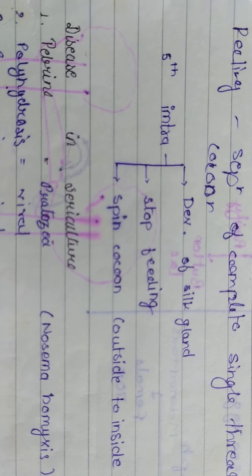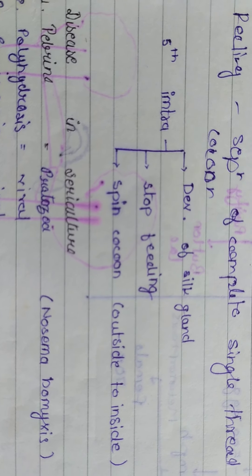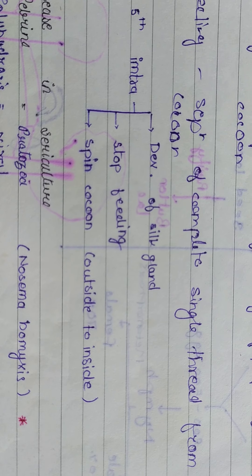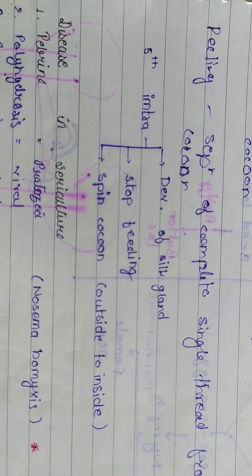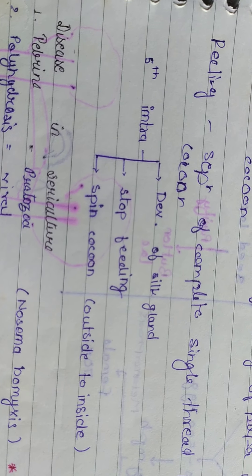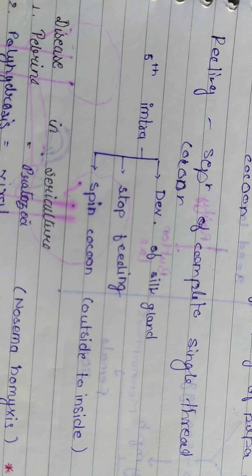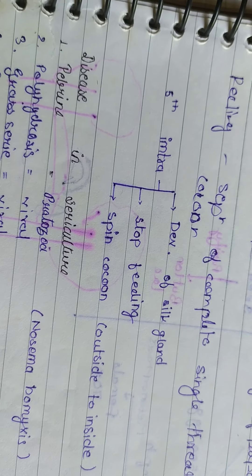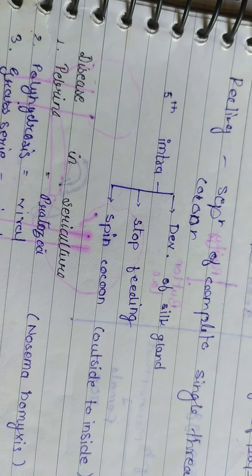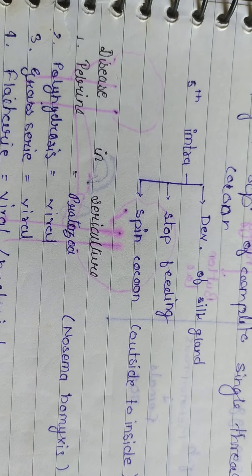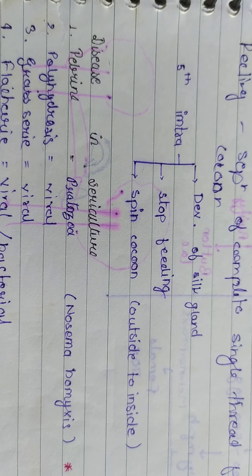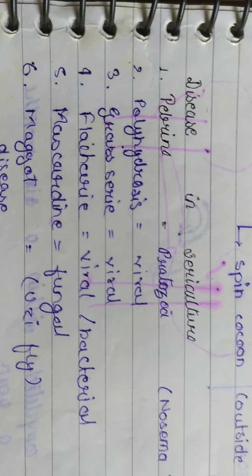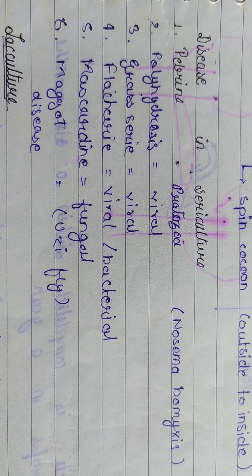The development of the silk gland involves top feeding. The cocoon is spun from outside to inside. Stifling and reeling are key processes in sericulture for extracting silk fiber.